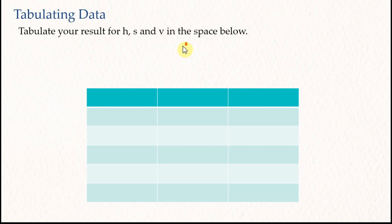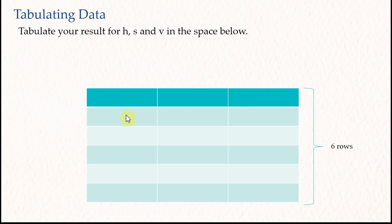For tables, you need columns and rows. It depends on how many quantities you need to record, but normally we have three: the manipulated variable, the responding variable, and the result of the calculation. We normally repeat the experiment four times including the first one, giving five readings, so we have six rows — one for the title and five for the readings. Usually we have three columns and six rows.